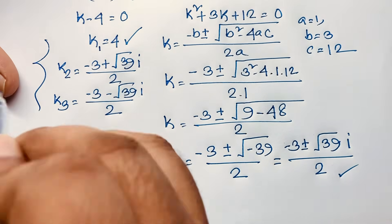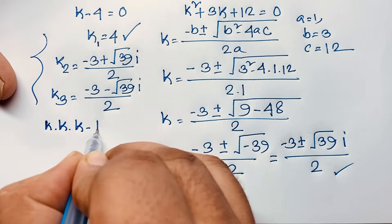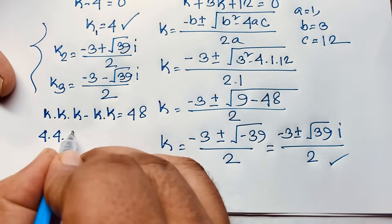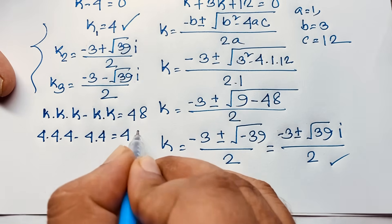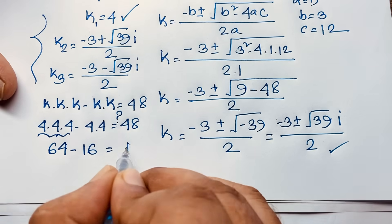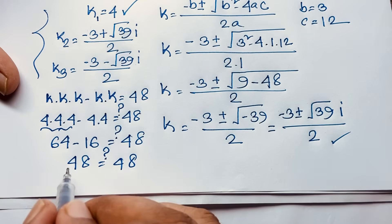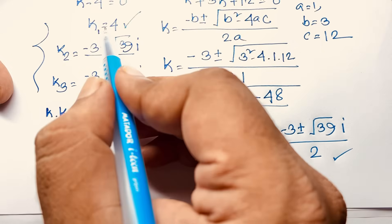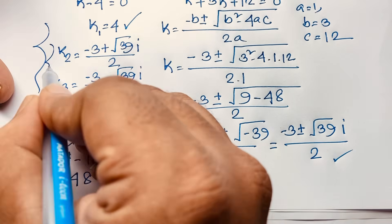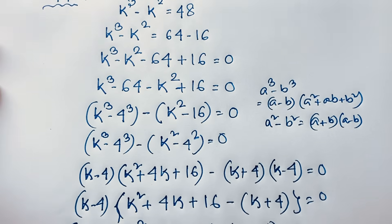These are our three solutions to this cubic equation. Let's verify with the real solution k equals 4: 4 times 4 times 4 minus 4 times 4 equals 64 minus 16 equals 48. Left hand side equals right hand side, so k equals 4 is confirmed as our real solution. The other two solutions, k equals negative 3 plus or minus root 39 i over 2, are complex numbers. Thank you all — if you enjoyed this math, please subscribe to my channel for more interesting videos. Goodbye, take care.